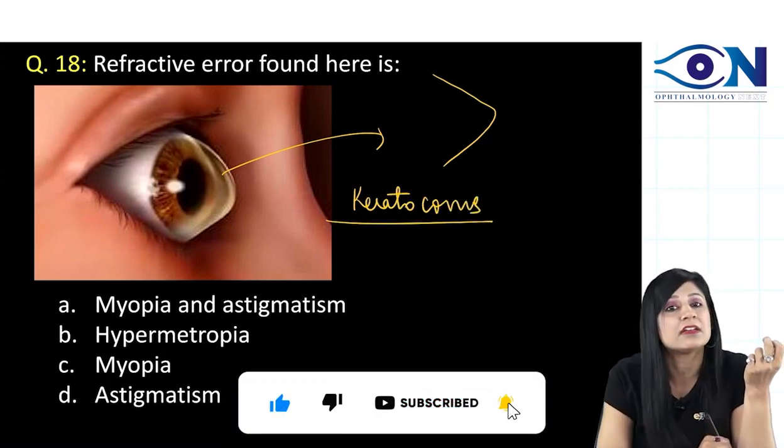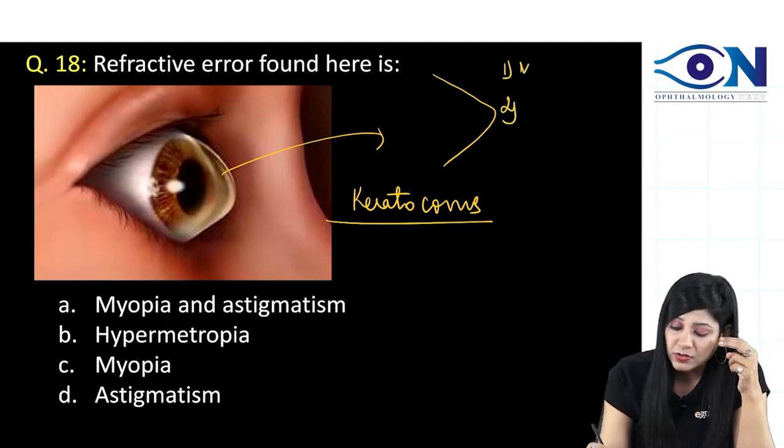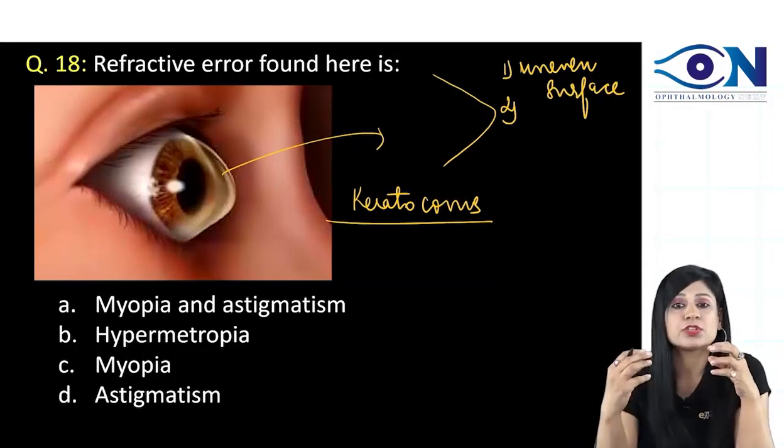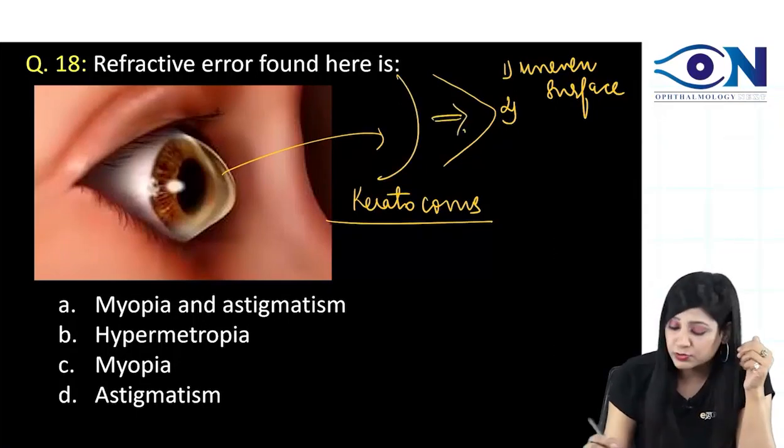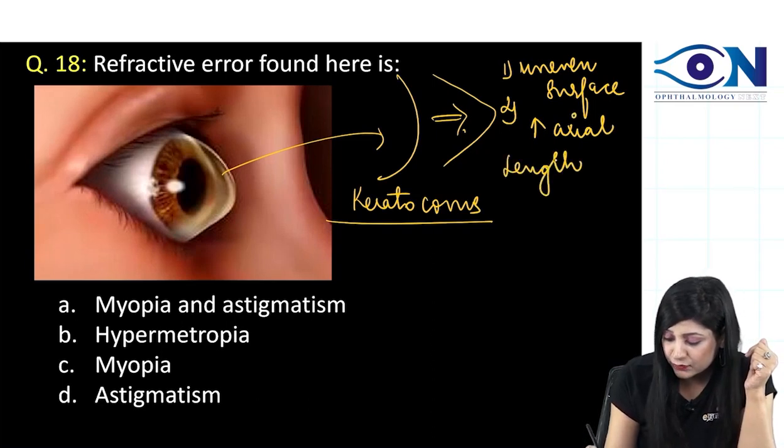What is the refractive error that you get in keratoconus? See there are two things here. Number one, you are going to get the uneven surface because we are having this conical protrusion. So, uneven surface and also you are having the increased axial length. We are also having the increased axial length of the eyeball.